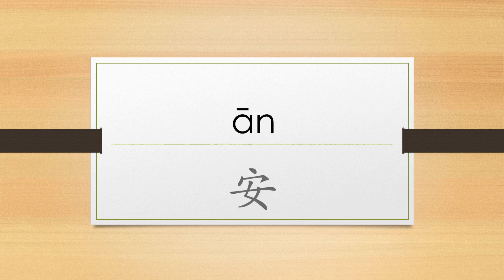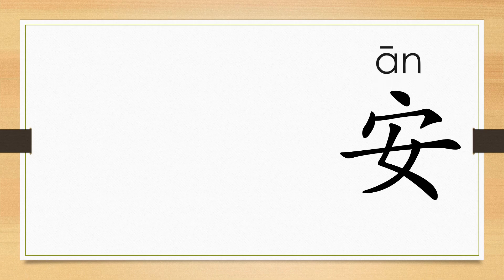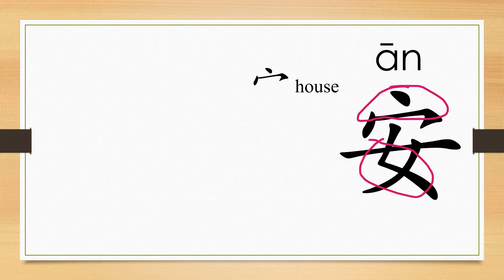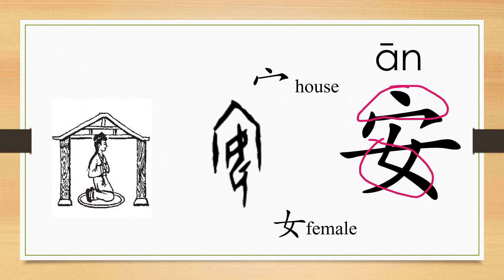Hello, today we are going to learn the character 安 (An). The character 安 includes the writing of the radical that represents house and the character 女 (Nu) which means female. So 安 combines the image of the house and the female. Since in ancient China, men are considered to walk outside and females are to stay at home, the image indicates being quiet and safe. That's the original meaning for 安.